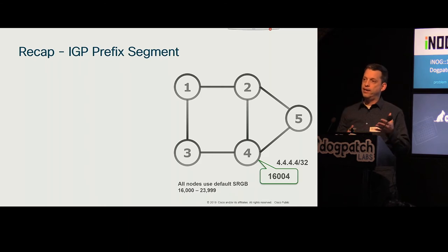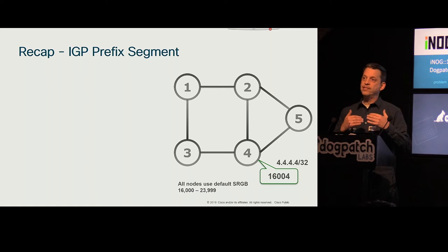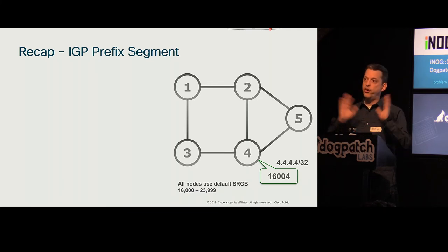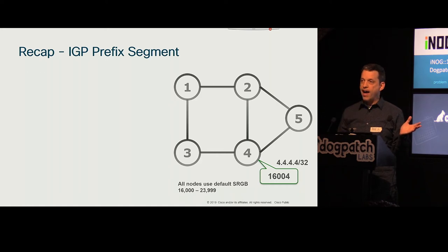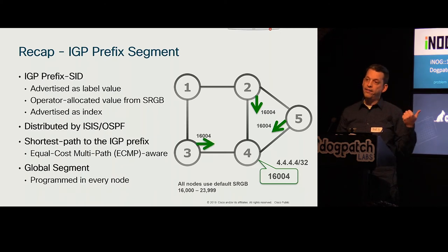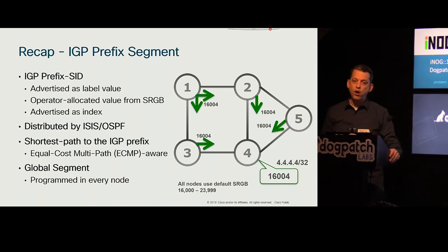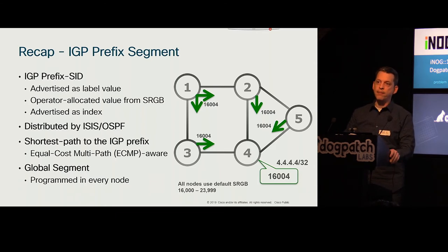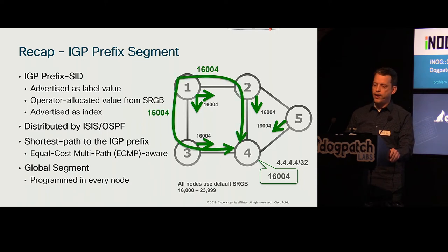For example, in this topology, router number 4 has a loopback 4.4.4.4/32 and a label 16,004 — a number easy for our brain to remember because you decided it. This is a global MPLS label value. Within the IGP — ISIS or OSPF — the prefix and label are distributed, and all routers compute the shortest path to that destination. Router 5, router 2, router 3 all push label 16,004 following the shortest path. Router 1 has ECMP to 4 and pushes the same label across both ECMP next hops — making this a global MPLS label with consistent label swap until the last pop.